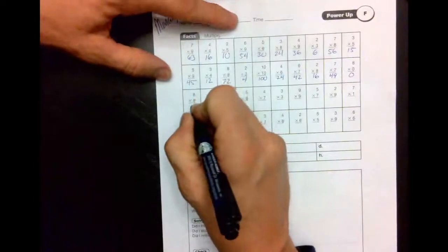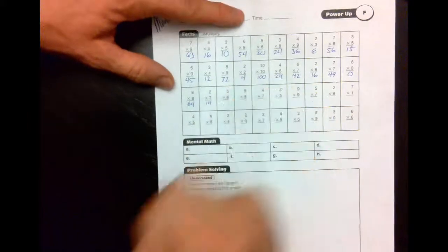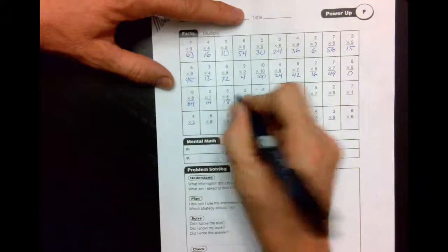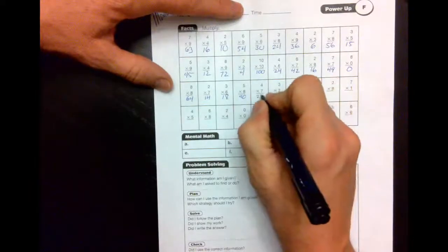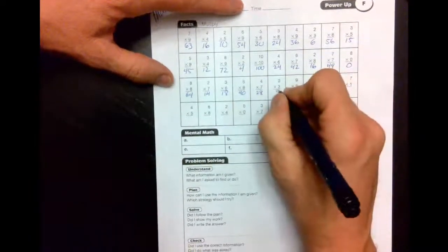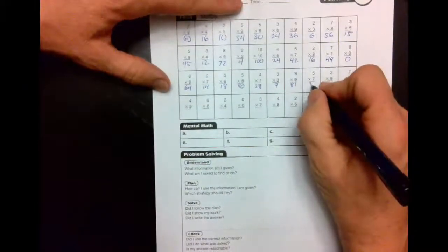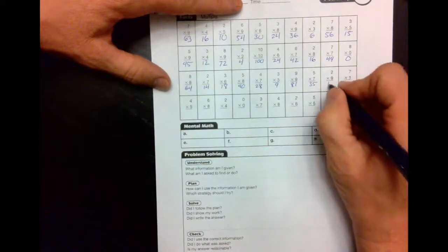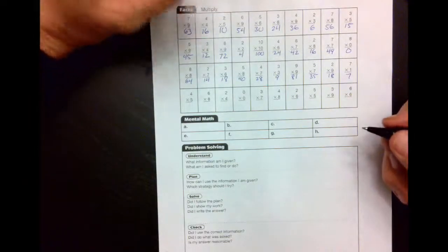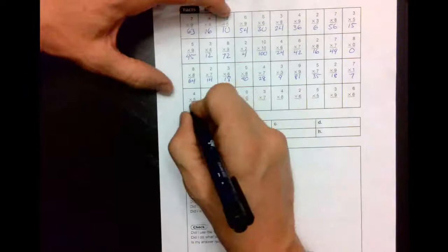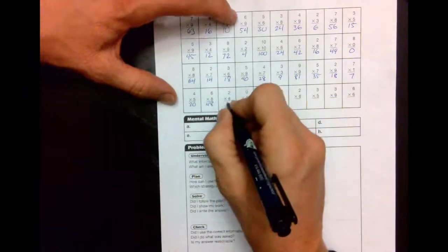8 times 8 is 64, 2 times 7 is 14, 3 times 6 is 18, 5 times 8 is 40, 4 times 7 is 28, 3 times 3 is 9, 9 times 9 is 81, 5 times 7 is 35, 2 times 9 is 18, 7 times 1 is 7, 4 times 5 is 20, 6 times 8 is 48, 2 times 4 is 8.